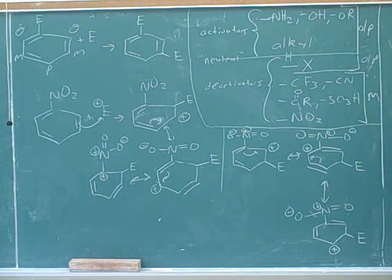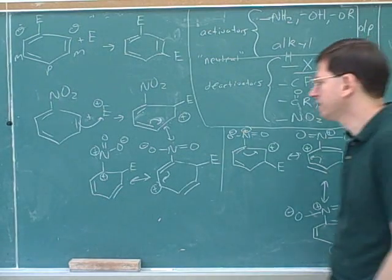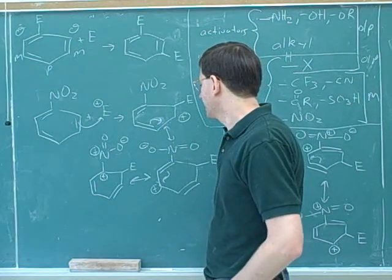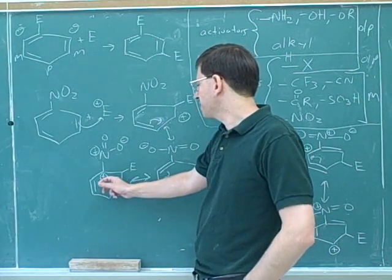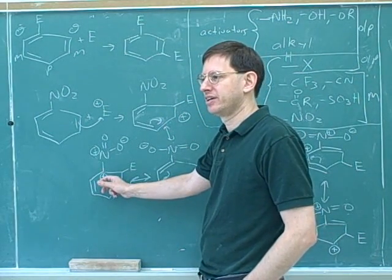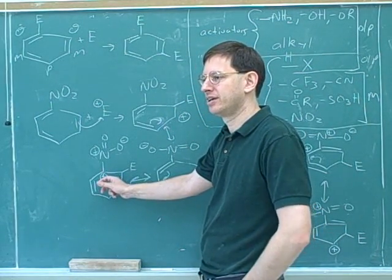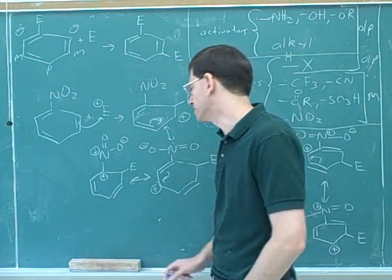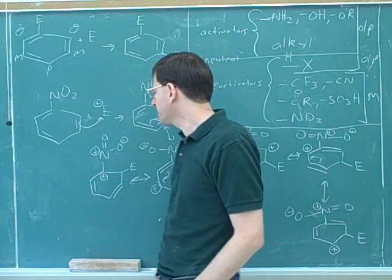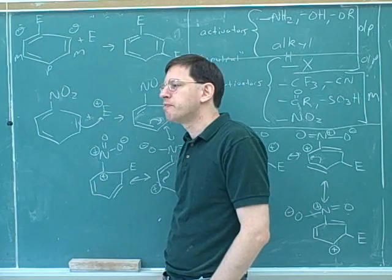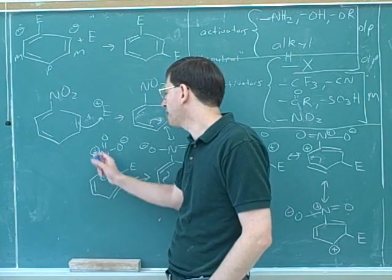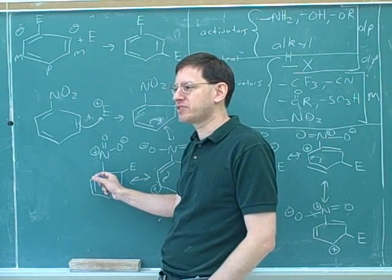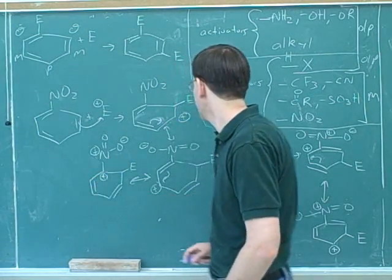When we have a nitro group, the whole idea is reversed. With the ortho attack, is this a happy or unhappy resonance structure? Unhappy — this is the least happy of the resonance structures. Nature doesn't like having two positive charges, but it hates having two positive charges right next to each other. Positive charges want to be separated.